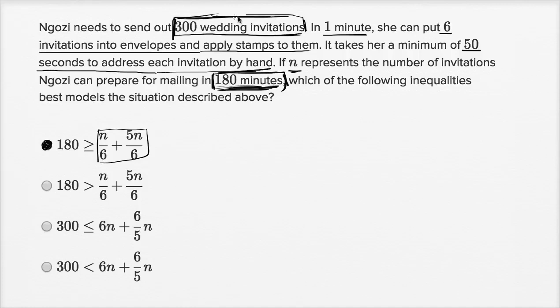That is the absolute cap on the total number of wedding invitations that she might be able to do. But that's not the constraint that we're talking about. We're constraining her actual time here. So let's verify that we feel good about this.